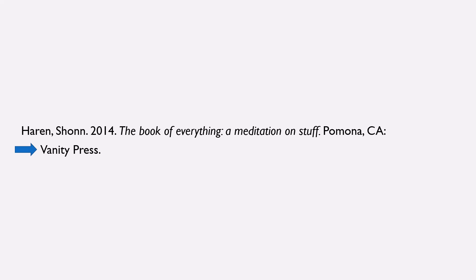The first part of most citations will be the author's name. In ASA style, this is formatted last name, comma, first name, followed by a period. The reason to format citations last name first is structural — your works cited page is organized alphabetically by author last name, hence it makes sense for it to be the first thing that pops out in a citation.